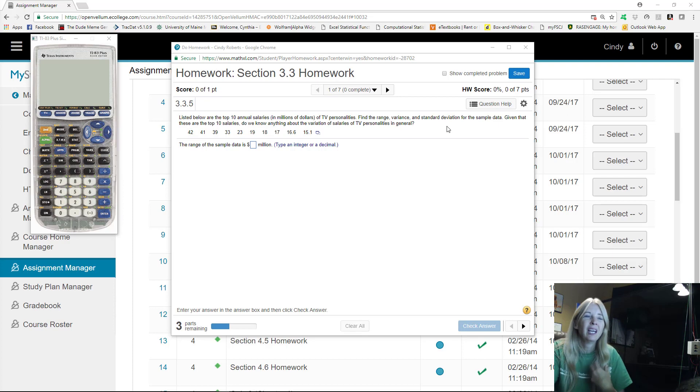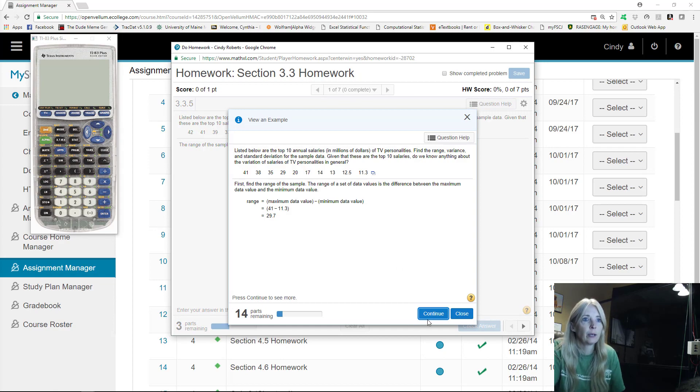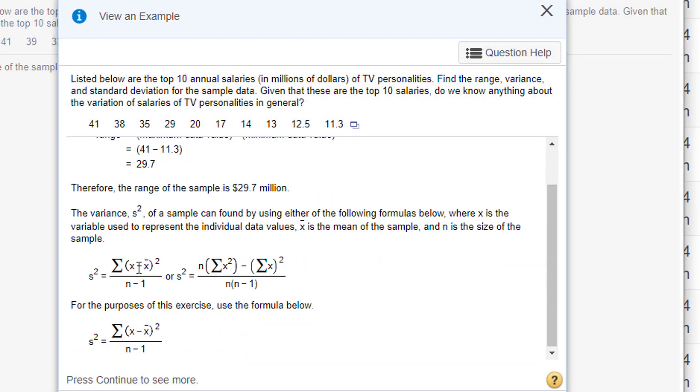Like I said, it's not a bad idea to go through the formula. It's not a bad idea to see how it works. Here it is right here again. So the variance: you're taking X, which is each data value, like 41, minus whatever the mean of this data set is.